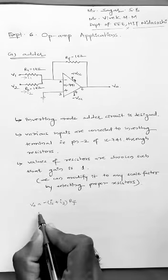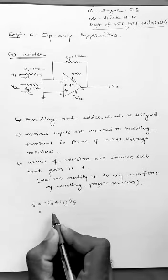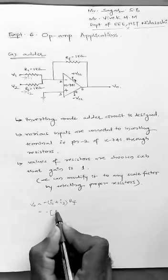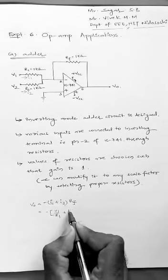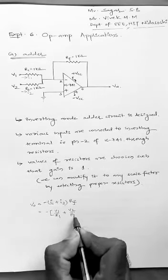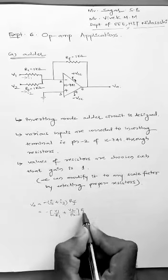Now, what is I1 and what is I2? If I substitute here, I1 will be nearly equal to V1 by R1. Similarly, I2 is V2 by R2 times RF.